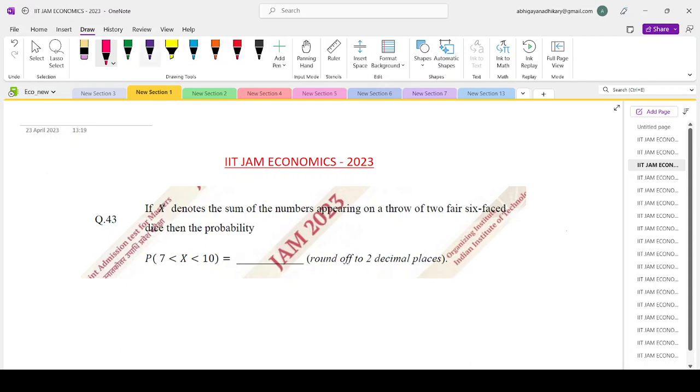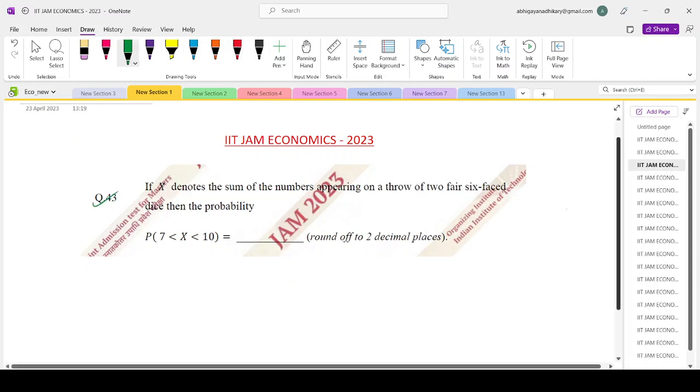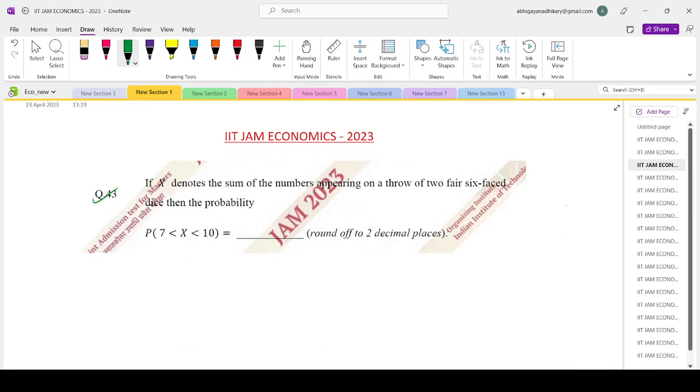Now let us have a look at question 43 of the IIT JAM 2023 question paper. If capital X denotes the sum of numbers appearing on a throw of two fair six-faced dice, then the probability P(7<X<10) would be how much, rounded off to two decimal places? So two fair dice are thrown.